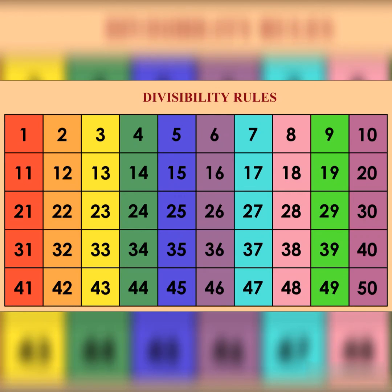Divisibility by 45 – a number is divisible by 45 if it is divisible by both 5 and 9.